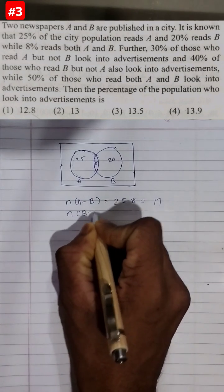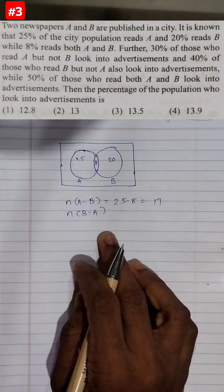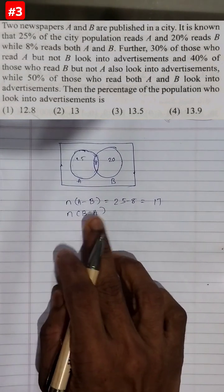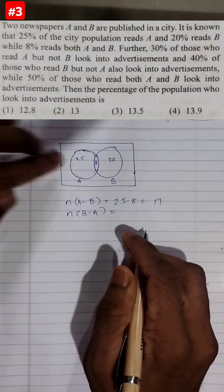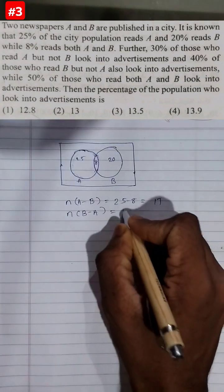N of B minus A, that is the total number of people who read B but not A, equals similarly 20 minus 8, which would be 12.